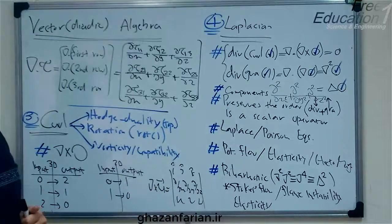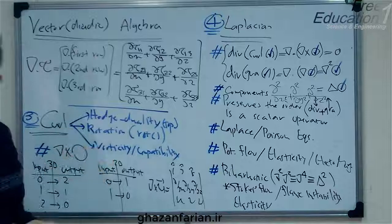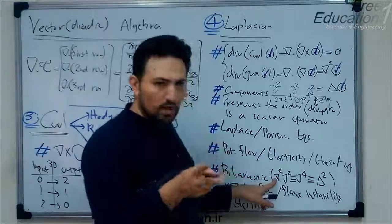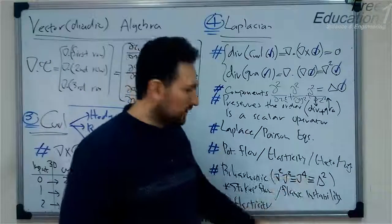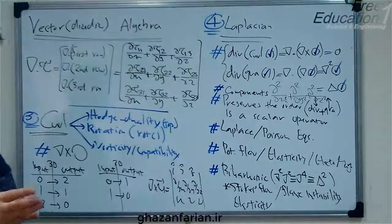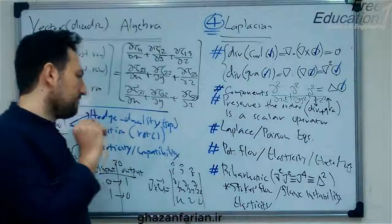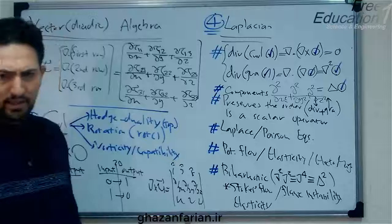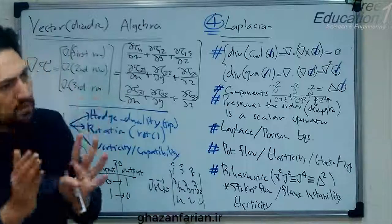Another important operator, which is derived from the Laplacian operator, is the bi-harmonic operator. When you apply the Laplacian operator twice, the result — shown by the del-4 or delta-squared operator — is the bi-harmonic operator. This important operator appears in creeping flow in fluid mechanics, in the instability analysis of flames, and in elasticity theory, where we have the bi-harmonic equation: the bi-harmonic operator of something equals zero.